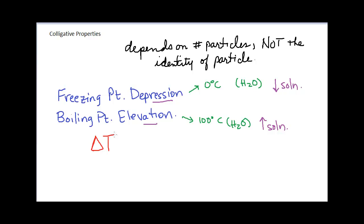The relationship between these changes can be written by a generalized equation: the change in temperature equals a constant times the molality of the solution. For freezing point, we use a subscript 'f' on the delta-T and on the constant Kf, the freezing point depression constant. You might look up Kf in a table, or you might be trying to determine it experimentally by knowing the molality and measuring the change in freezing point.